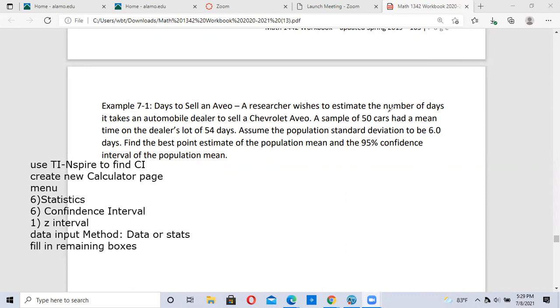Let's go through the problem. A researcher wishes to estimate the number of days to sell a Chevrolet Aveo. A sample of 50 cars, so n equals 50. The mean time on the dealer's lot is 54 days. The population standard deviation is 6.0, and we want to do a 95% confidence interval, which is 0.95 in decimal form.